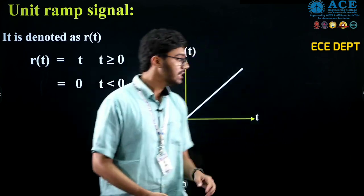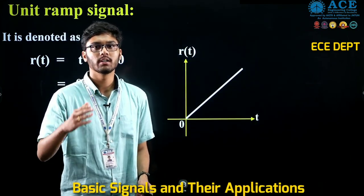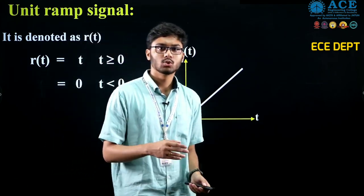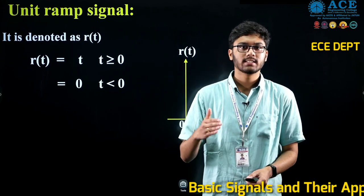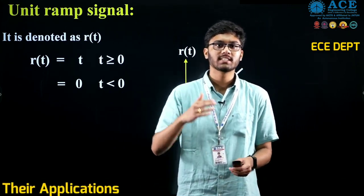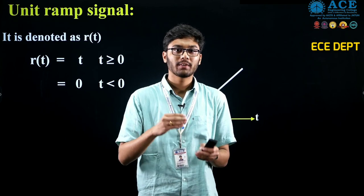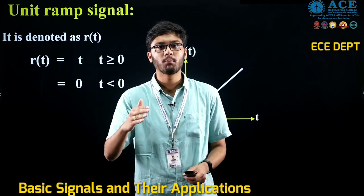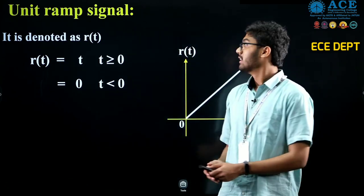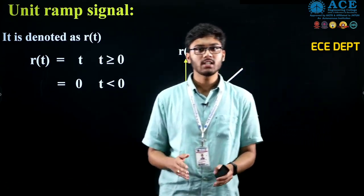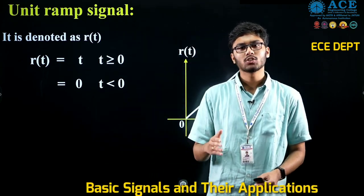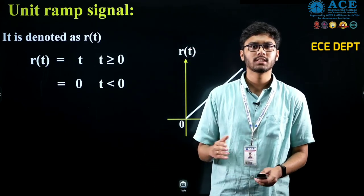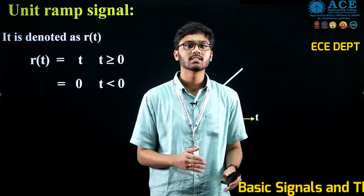The practical application of this signal is that it is used to know the threshold voltage of a device. As t increases, r(t) also increases, so by giving this signal as input, we can know at which point the device gets burnt — that is, how much input voltage a device can withstand. One more application is that a limited segment of the ramp signal forms a sawtooth waveform, which is used in CROs as a tracer to trace the input signal.